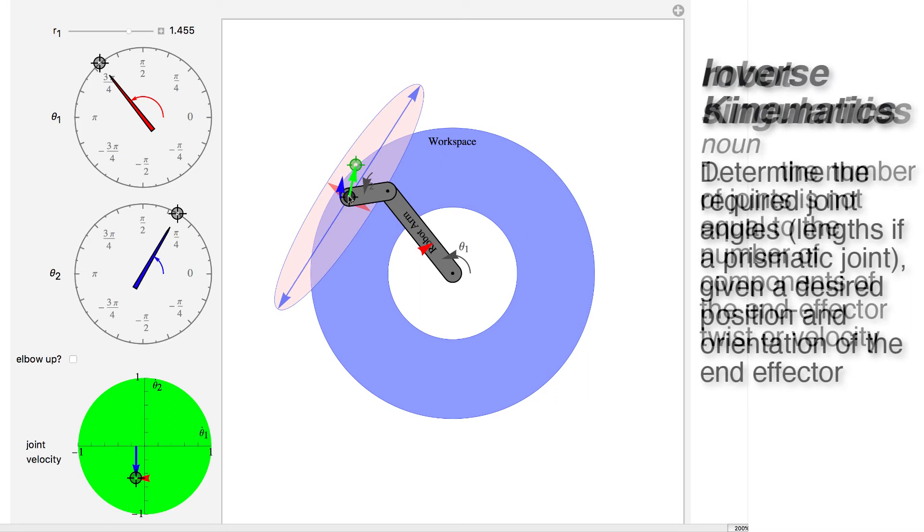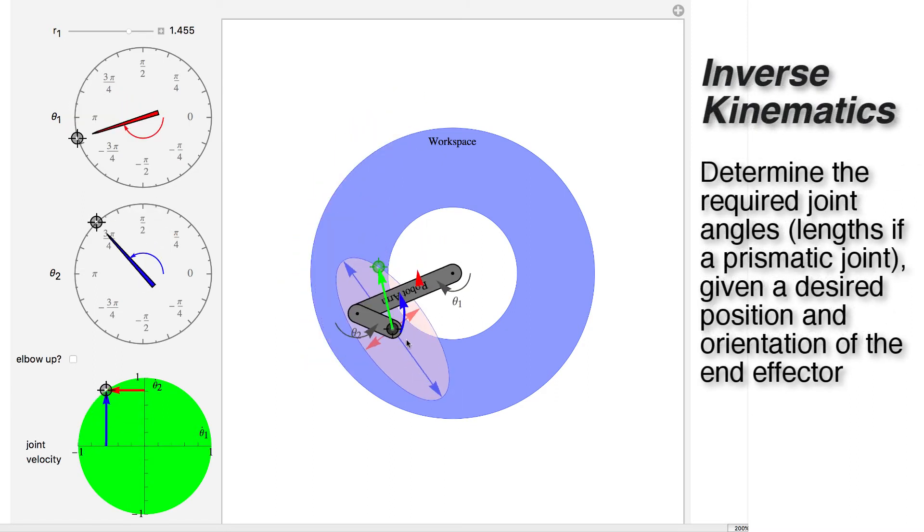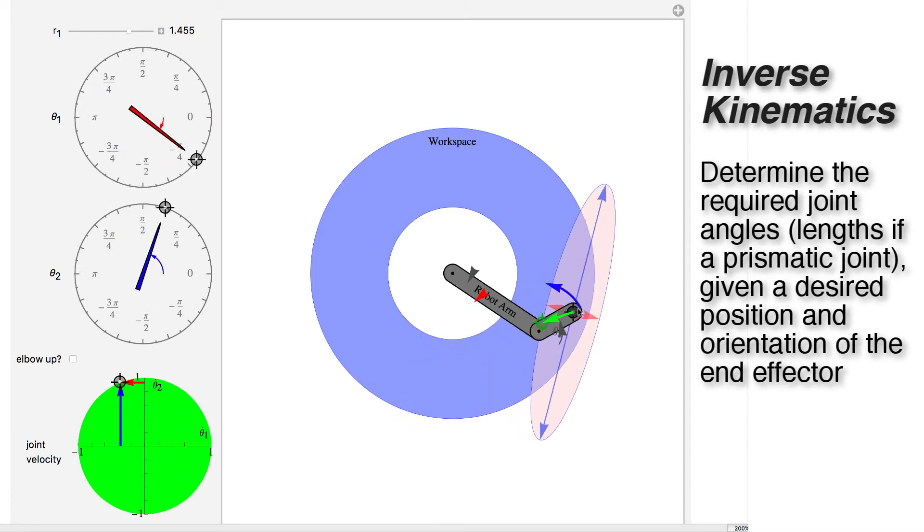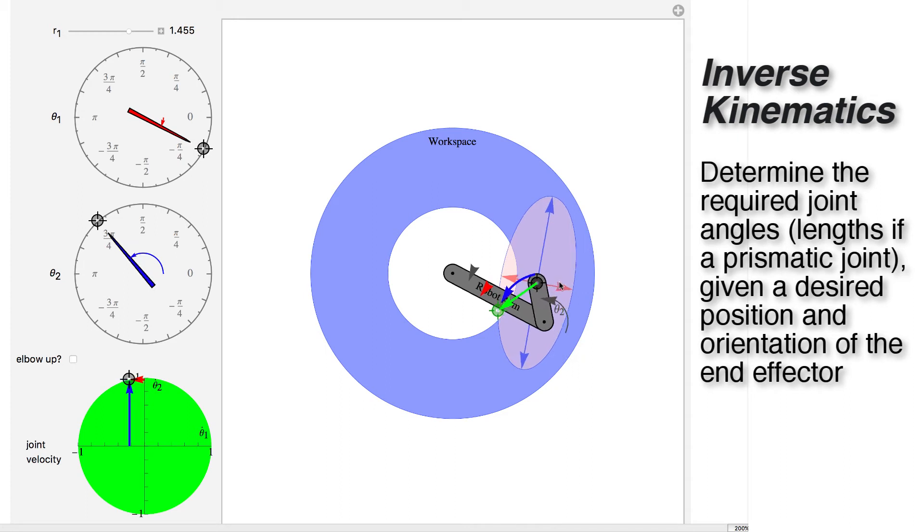Inverse kinematics says, well I want to drag this ending point of the robot somewhere and you tell me what are the angles. So you can see that these angles are adjusting to get that end effector right where I drag it.